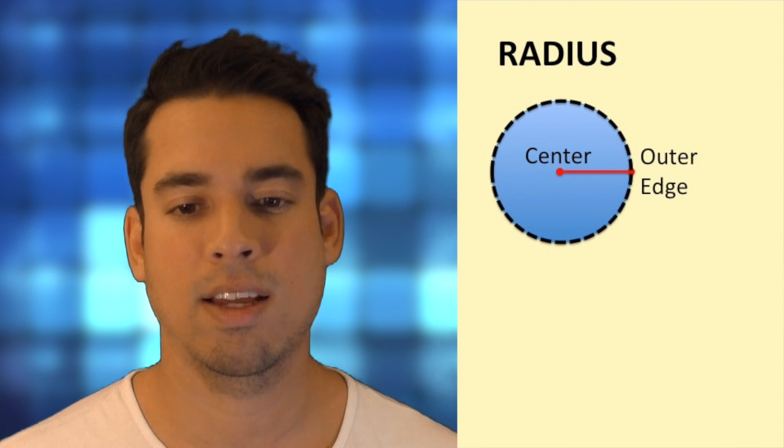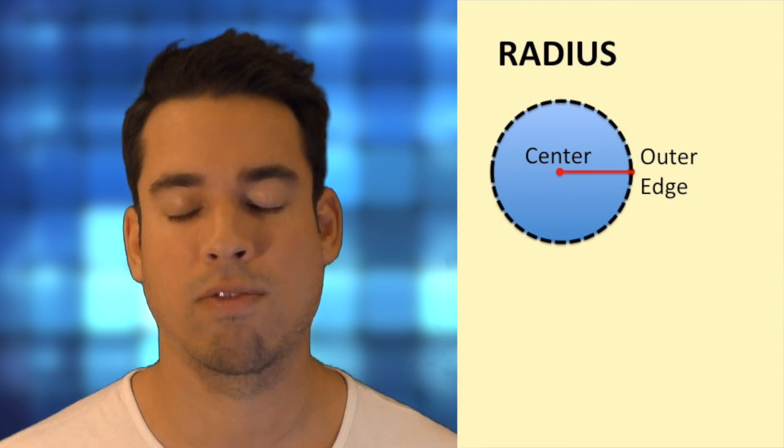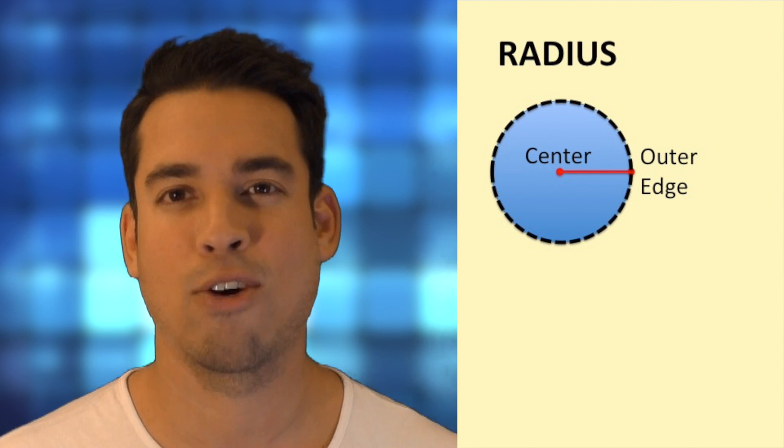So you see here this red line, that is the radius, and we're going from the center to the outer edge.